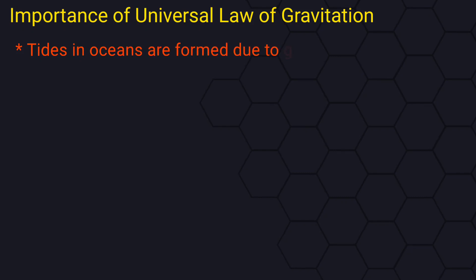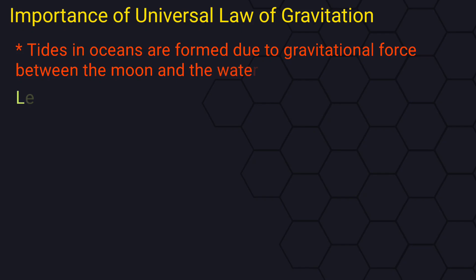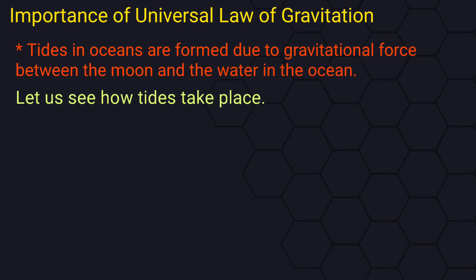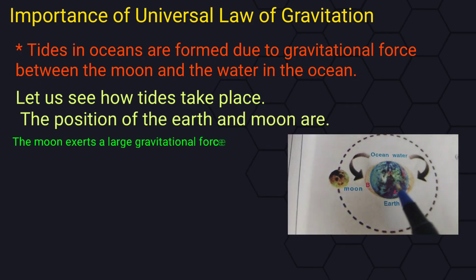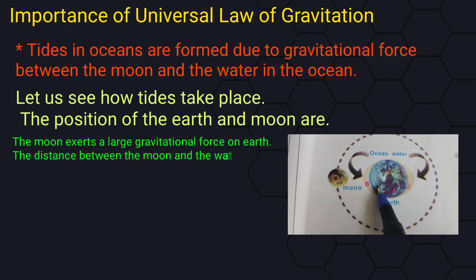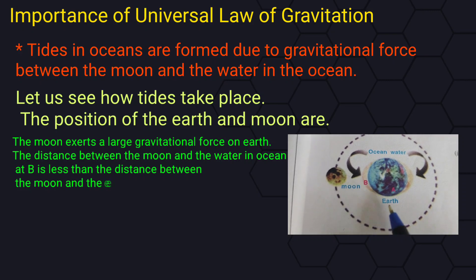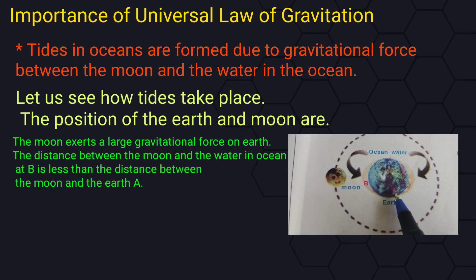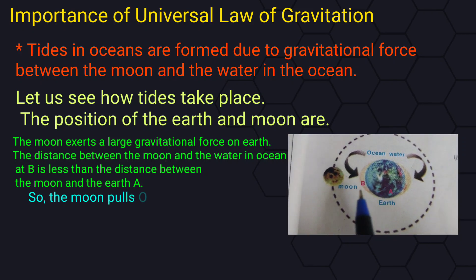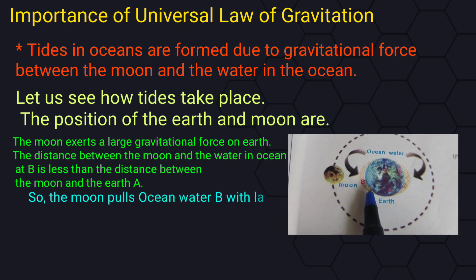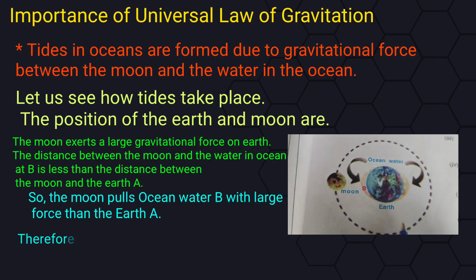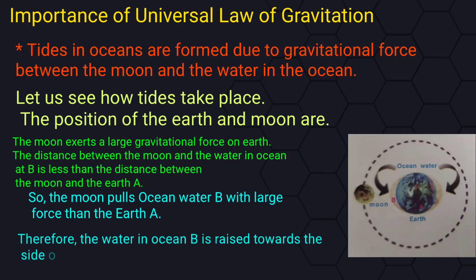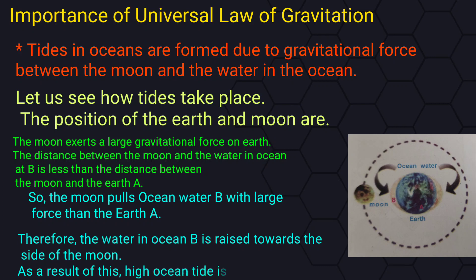Tides in the oceans are formed due to the gravitational force between the Moon and the water in the ocean. The Moon exerts a large gravitational force on Earth. The distance between the Moon and the ocean water at point B is less than the distance between the Moon and the Earth at point A. So the Moon pulls the ocean water at B with a larger force than the Earth at A. Therefore, the water in the ocean at B is raised towards the side of the Moon, causing a high ocean tide.